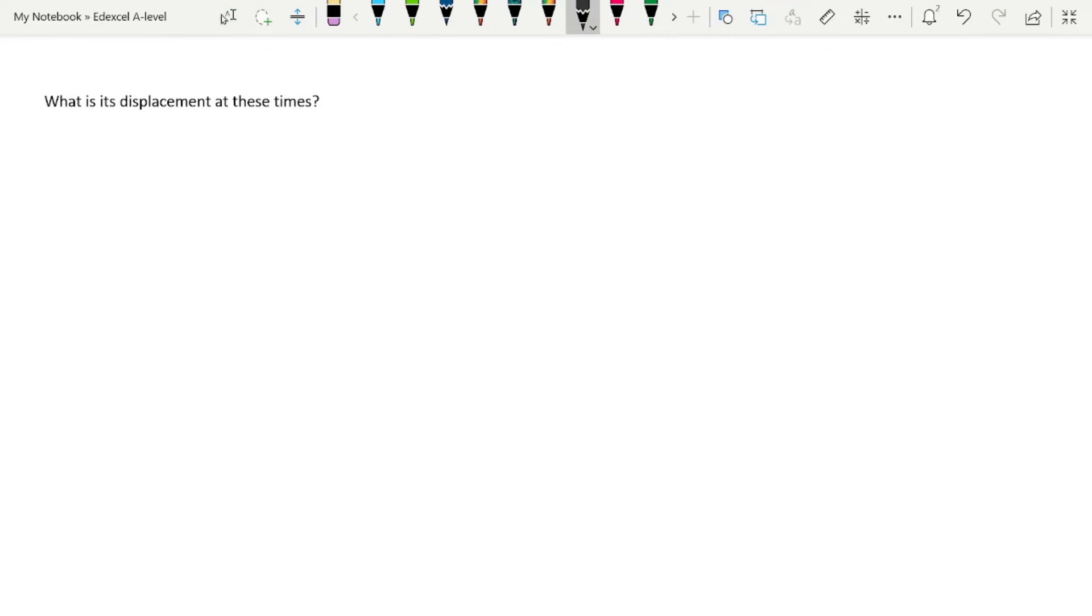Let's now calculate the displacement at these times. Again, we'll write out our SUVAT here. We know u is minus 22.3 meters per second.